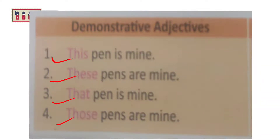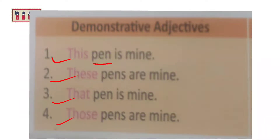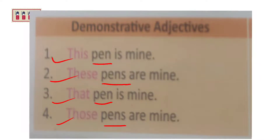They are demonstrative adjectives because they are used with nouns. You can see: 'pen' is a noun, 'pens' is a noun. When demonstrative words — this, that, these, those — are used with nouns, they are called demonstrative adjectives. Like in this example: 'This pen is mine.'